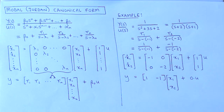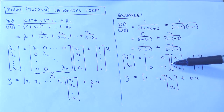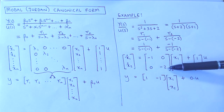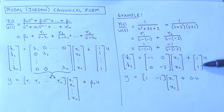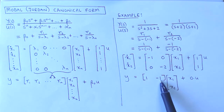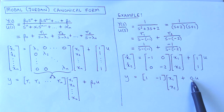After this, we simply write down the matrix A, or capital lambda, as a diagonal matrix with the poles minus 1 and minus 2 on the diagonal. The vector B contains only 1s, the vector C contains the residuals 1 and minus 1, and the scalar D is equal to 0.